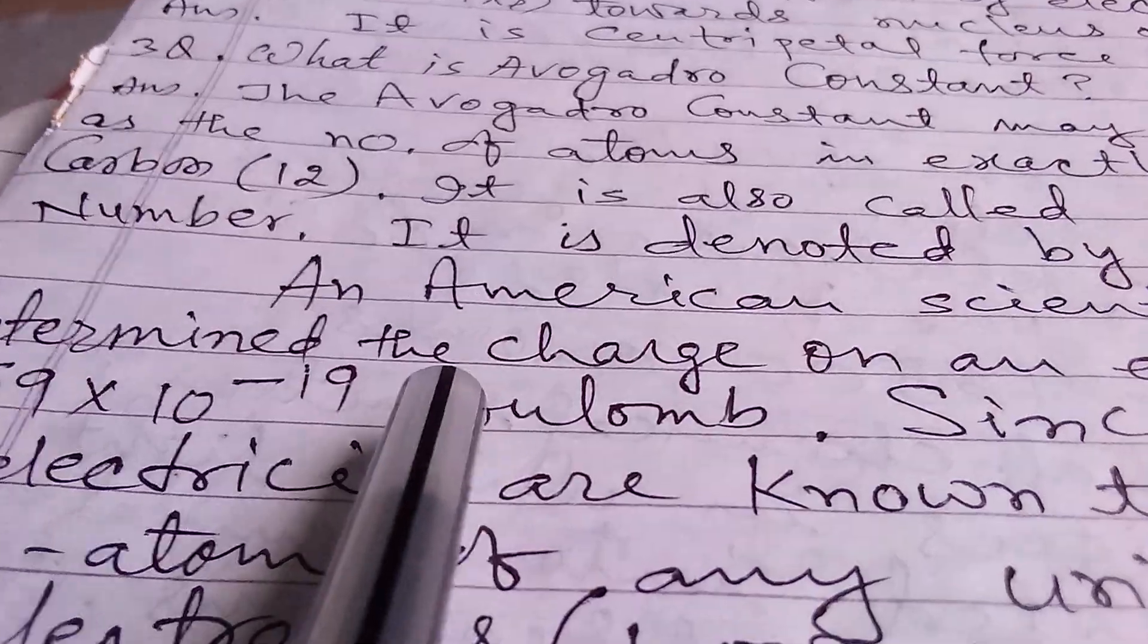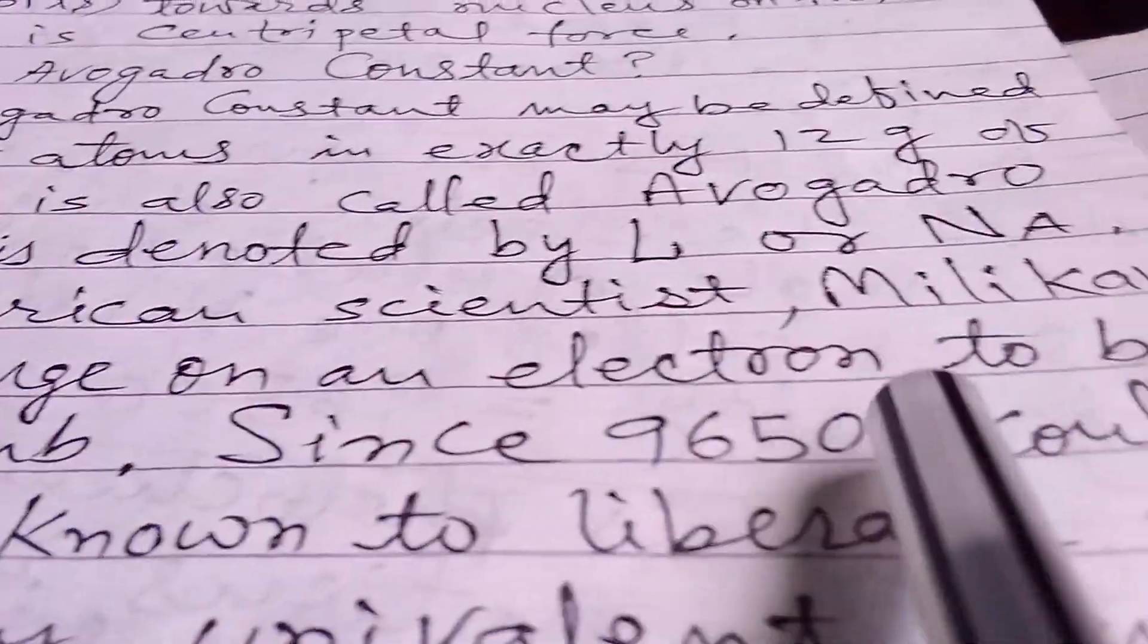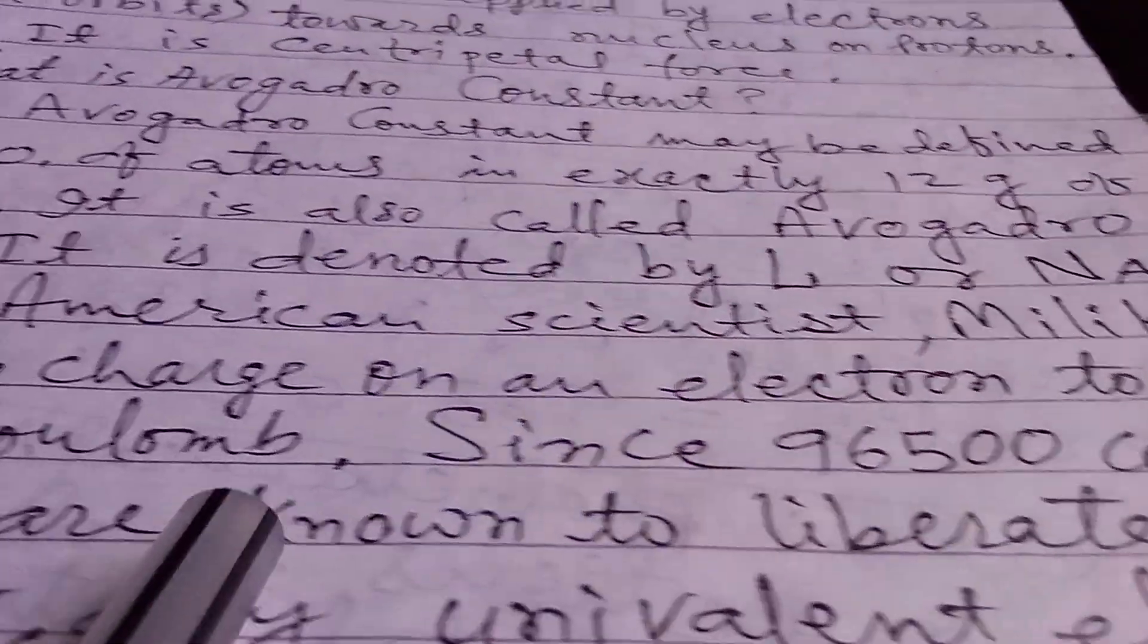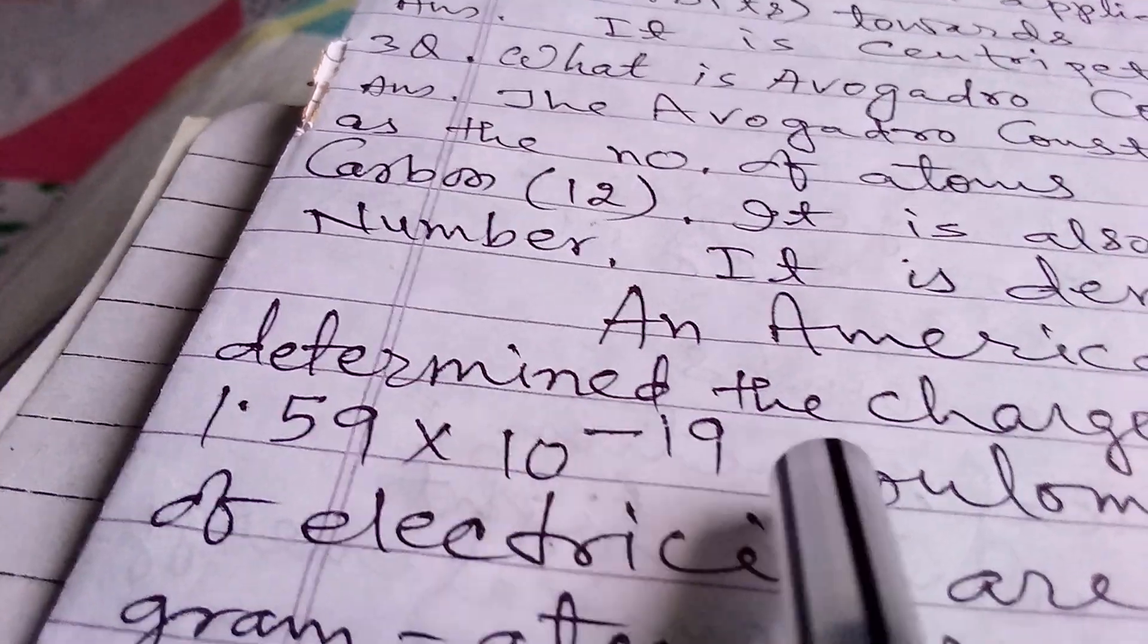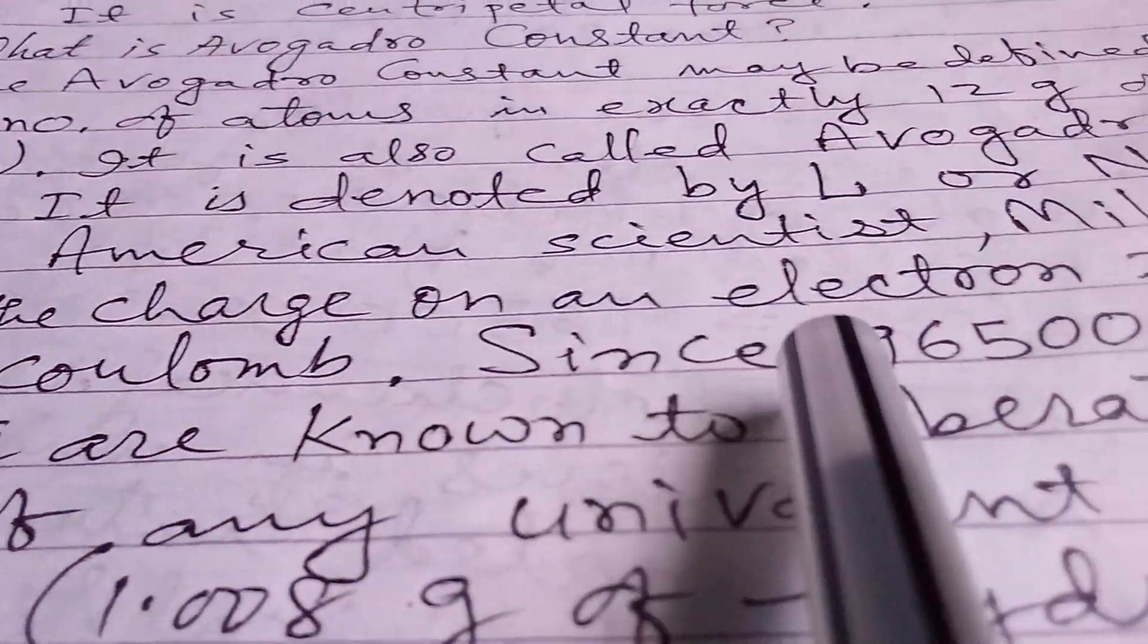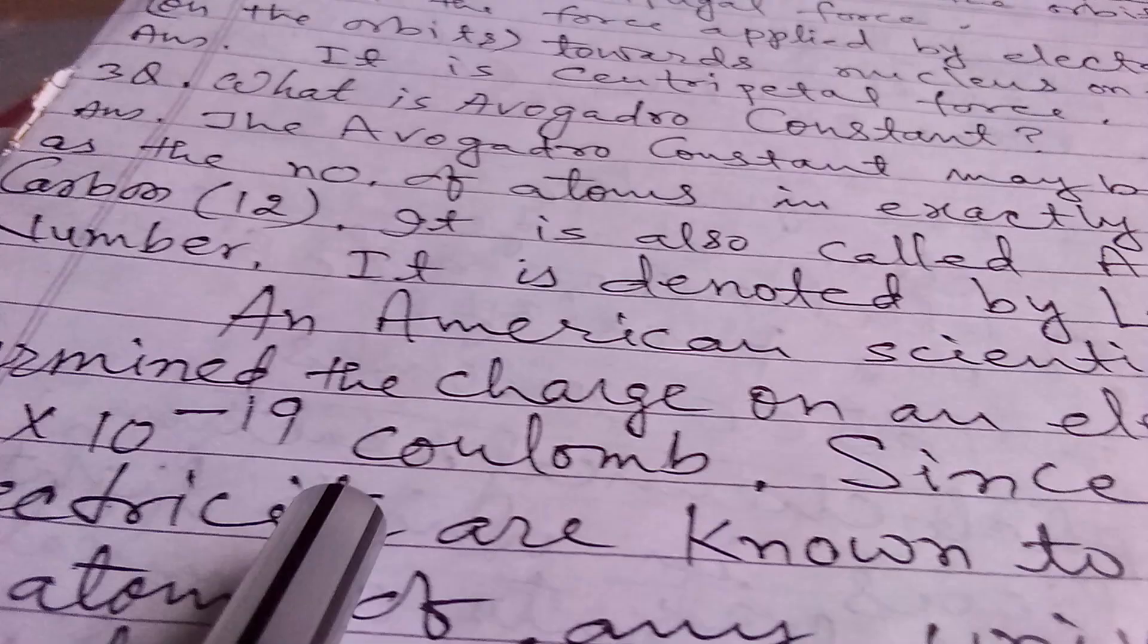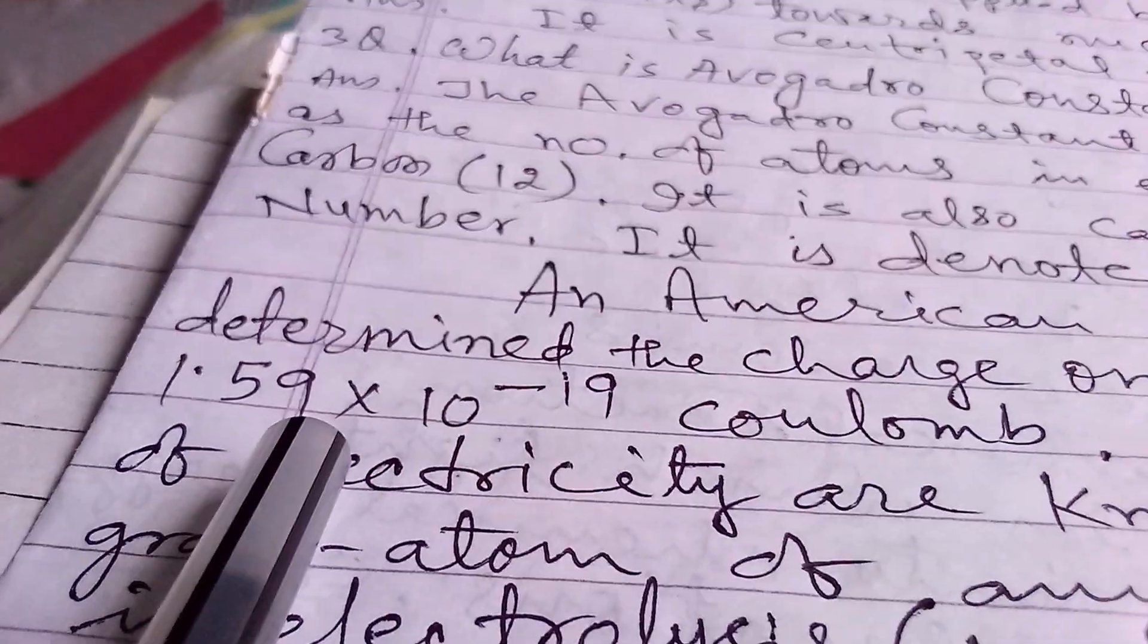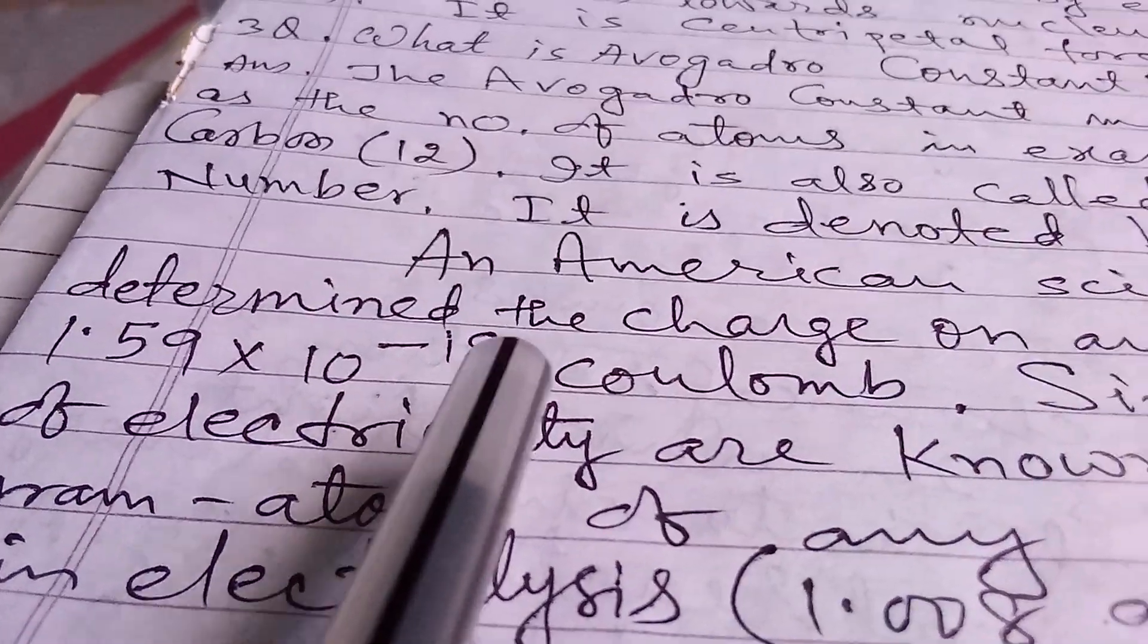An American scientist Millikan determined the charge on an electron to be 1.59 × 10^-19 coulomb.